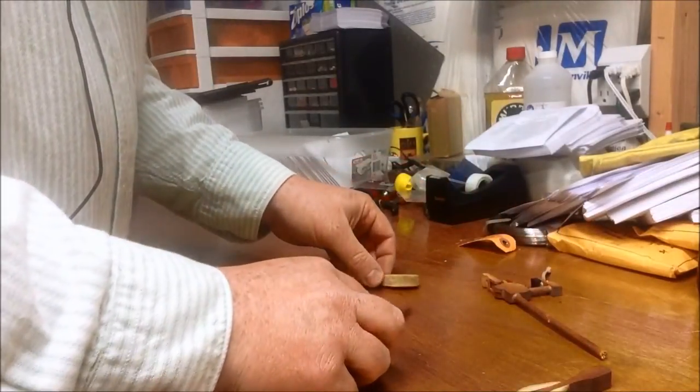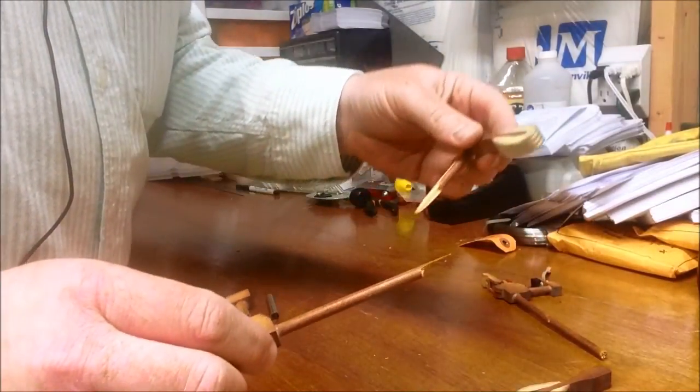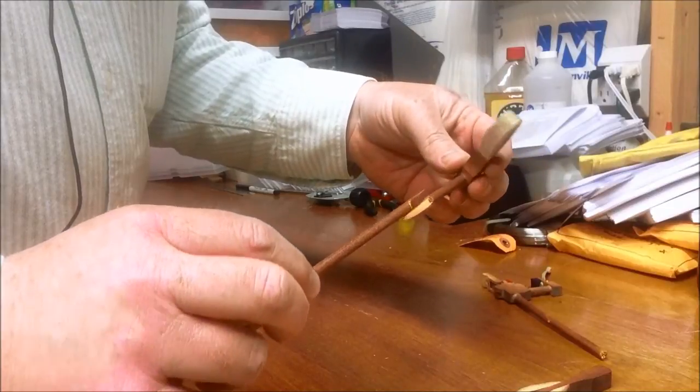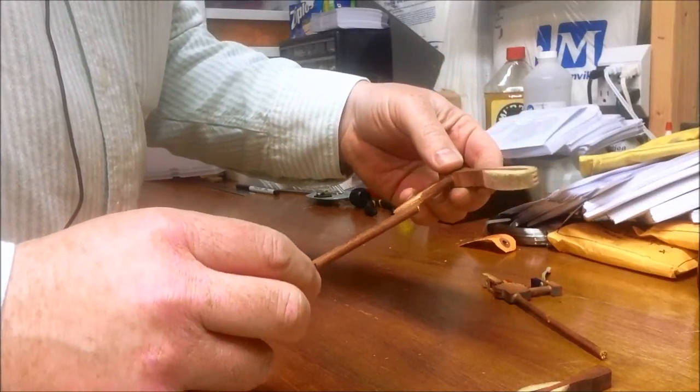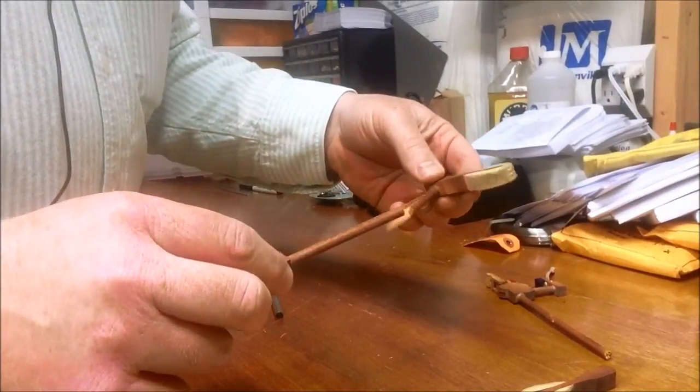But if we've got an instance where the shank broke in the middle and you've got enough surface area to be able to glue, you can actually make a repair on the shank.